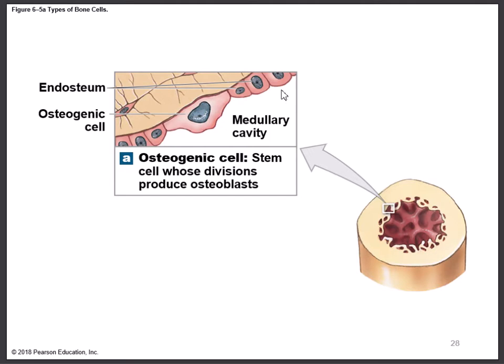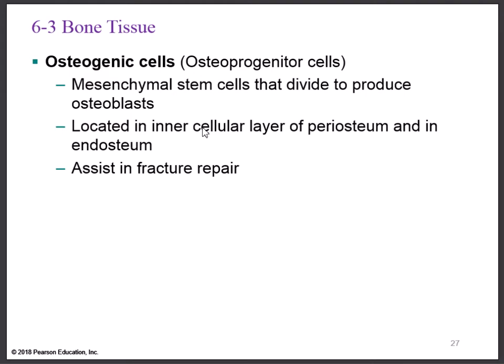The osteogenic cell can produce osteoblasts. This is especially important in adults, when we're no longer growing. If we fracture a bone, these osteogenic cells produce the osteoblasts needed to heal and repair the bone. So they are important, particularly as an adult, in fracture repair.